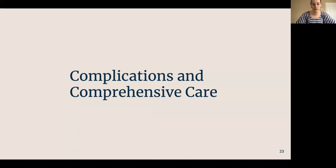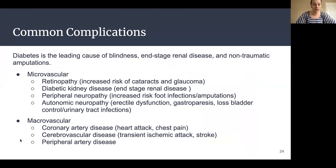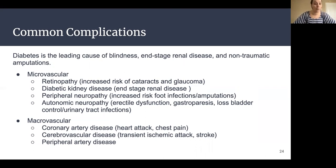The last thing we're going to talk about are complications and comprehensive care for diabetes. Diabetes is the leading cause of blindness, end-stage renal disease, and non-traumatic amputations — so it can be fairly serious if blood sugar is elevated for a long period of time. Microvascular complications include retinopathy — problems with our eyes, increased risk of cataracts and glaucoma. You could see diabetic kidney disease, which could eventually progress to end-stage renal disease if not managed. You could also develop peripheral neuropathy, where nerves in your feet cause numbness, tingling, or pain, which increases the risk of foot infections and amputations.